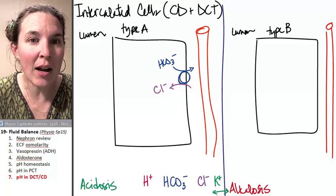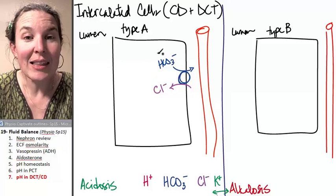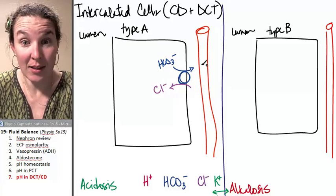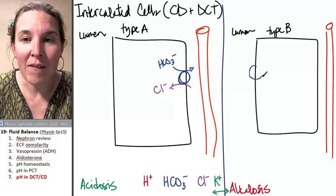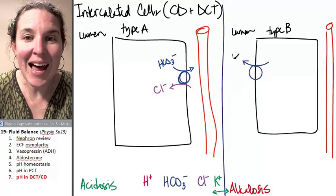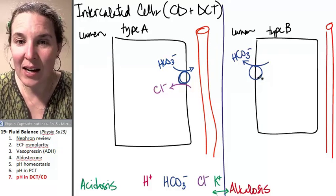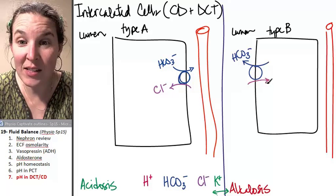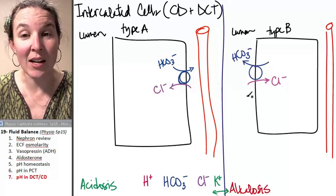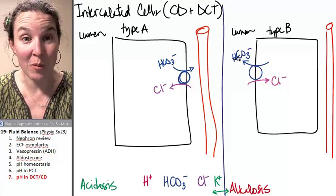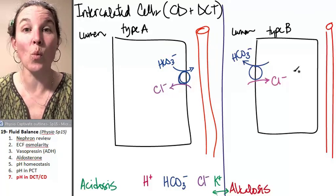This is in the basolateral membrane of type A's, which makes sense. We're too acidic. Let's reabsorb bicarbonate ions. It makes perfect sense, doesn't it? We're too basic. Let's get rid of bicarbonate ions. Exact same transporter just on the other side of the cell. And if we stick that same transporter on the luminal side, we're going to secrete bicarb. If we stick it on the basolateral side, we're going to absorb bicarb. Makes sense that we would want it where we would want it.